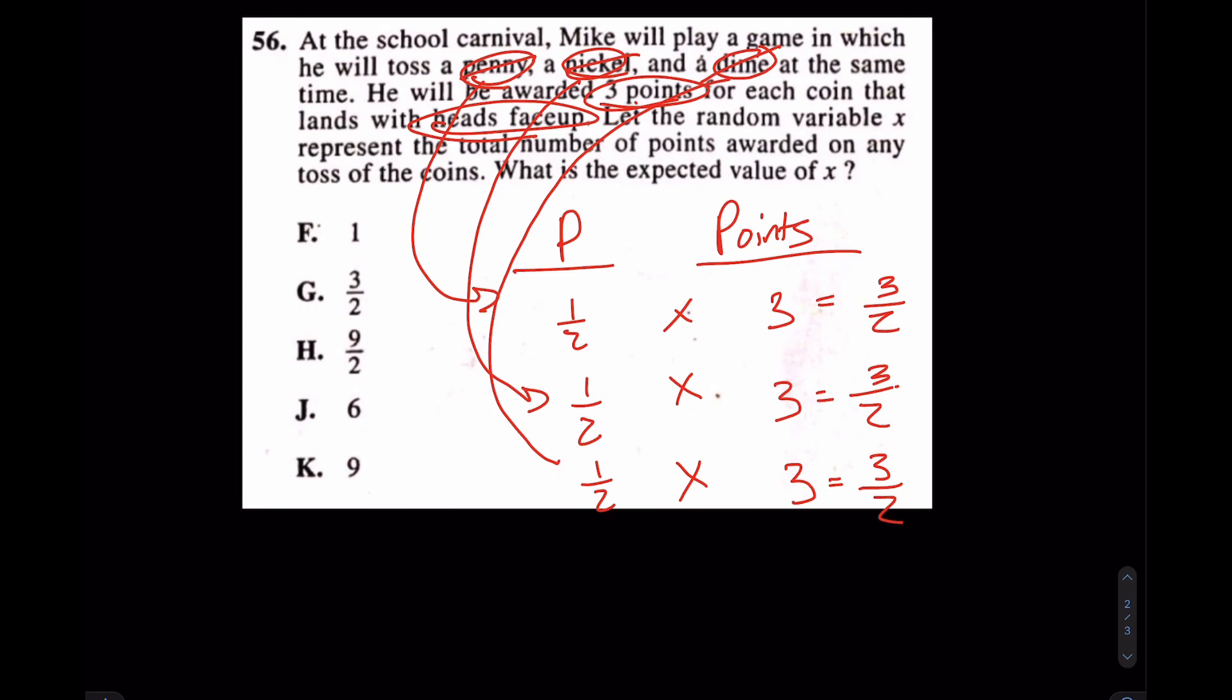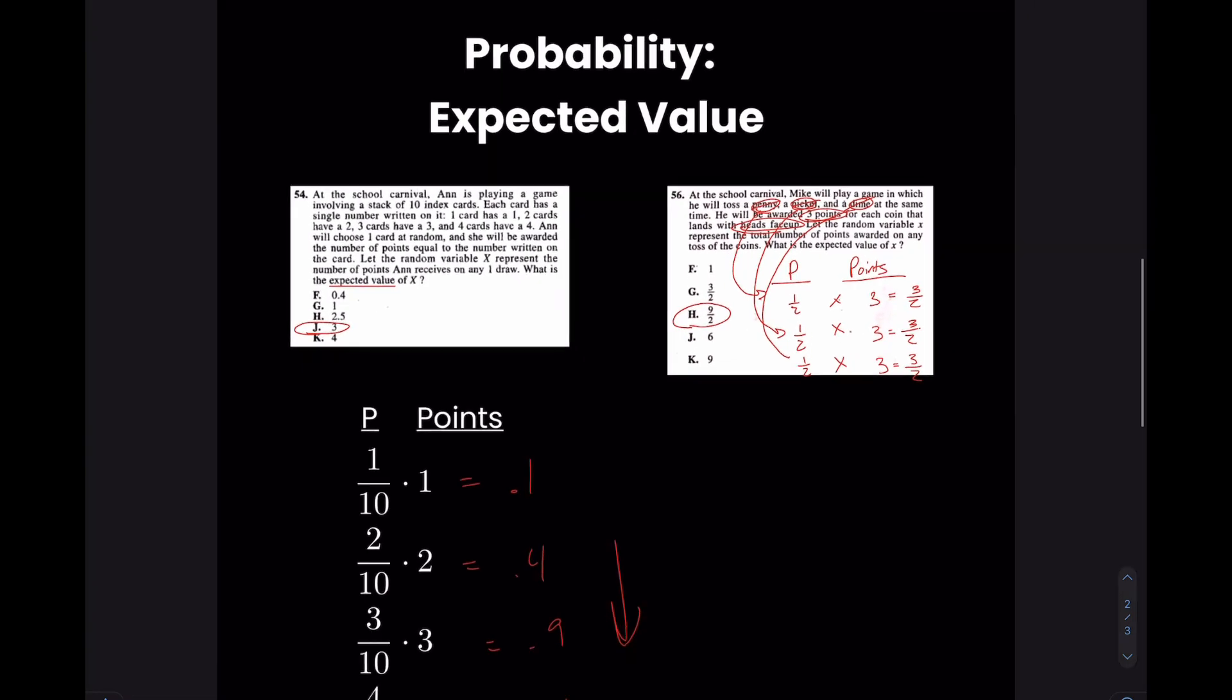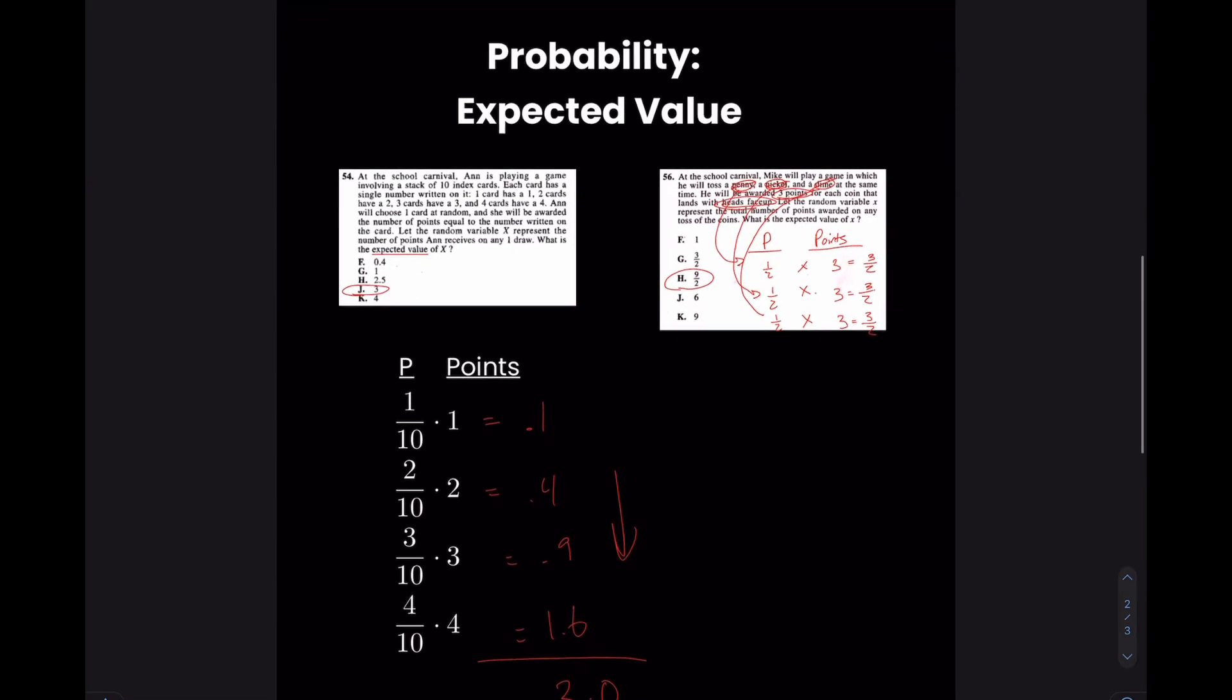And your final answer would be the sum. Really, your expected value of playing this game would be nine halves. The answer is H. If that doesn't clarify expected value for you, please holler off in the comments, and I will get back to you. But for now, that is my quick little explanation of expected value.